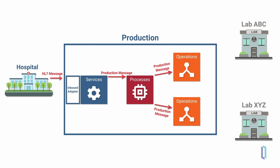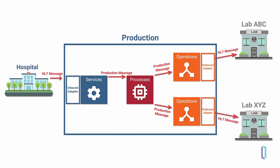Finally, the business operation receives the production messages from the business process and sends the HL7 messages to the receiving lab through the outbound adapter, which is responsible for sending messages to external systems.